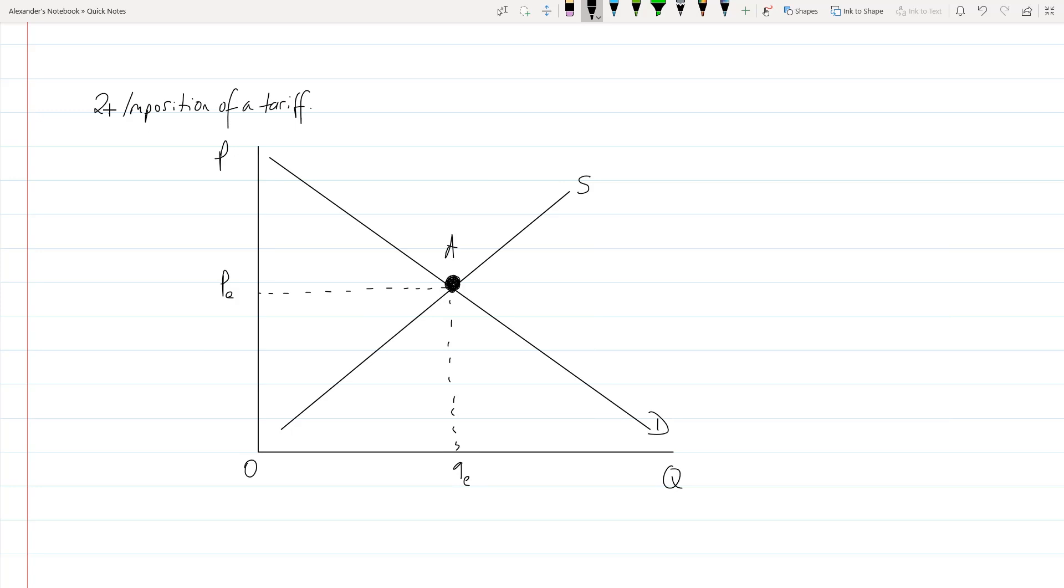I've got a separate video on this, which I'll link to in the description. So let's say that the world price, we're going to make it quite a bit lower than equilibrium price. What we can do is just create this line going straight across here. And that there it is. So then this would be price world, the price of imports.